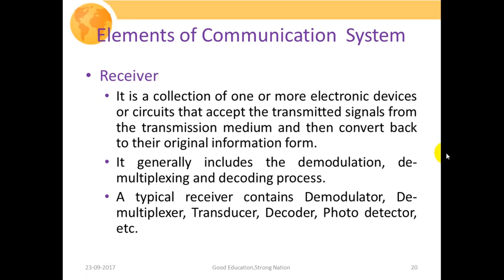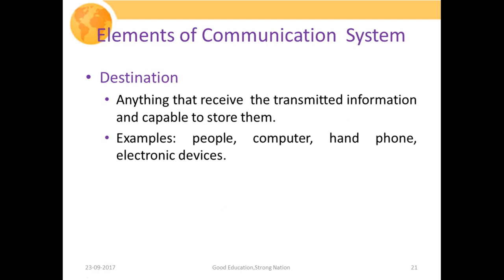A typical receiver contains devices such as a demultiplexer, transducer, decoder, photodetector, etc. At last, destination is anything that receives the transmitted information and is capable of storing it. In one-to-one or person-to-person communication, the destination is the other person to whom one person wants to transmit information. It must have capabilities to understand and store the information. Examples of destination devices are people, computers, handphones, electronic devices, etc.